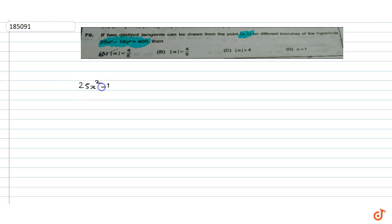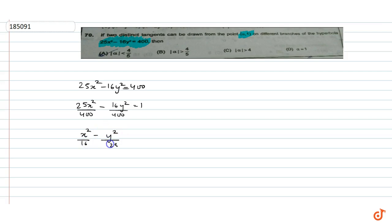The equation given is 25x² minus 16y² = 400. Dividing throughout, we get 25x²/400 minus 16y²/400 = 1, that is x²/16 minus y²/25 = 1. The general equation of a hyperbola is x²/a² minus y²/b² = 1.